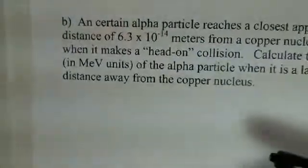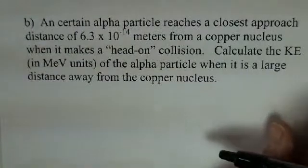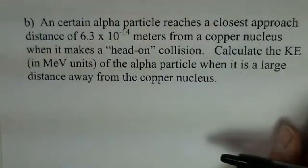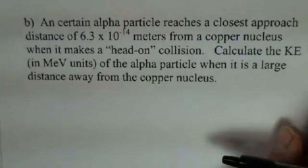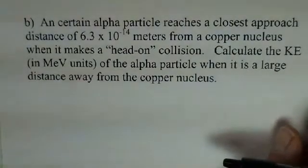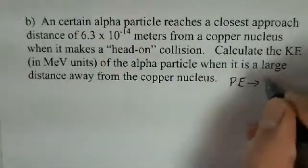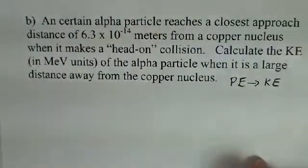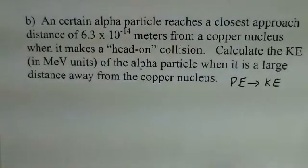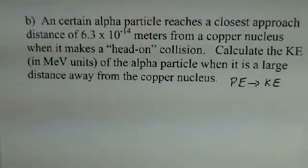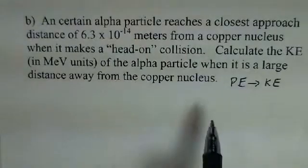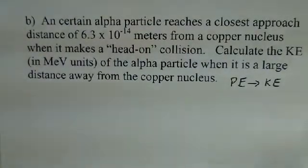So Part B: we have an alpha particle that approaches a copper nucleus and reaches a distance of 6.3×10⁻¹⁴ meters making a head-on collision. What is its kinetic energy in MeV a long distance away from the copper nucleus? All the potential energy is going to convert to kinetic energy as the alpha particle moves far away. I should mention I'm ignoring any motion of the nucleus — the nucleus is much more massive than the alpha particle, it doesn't move much.